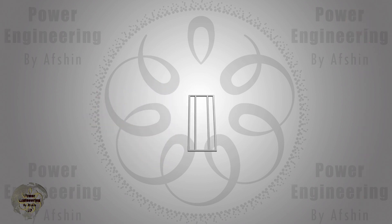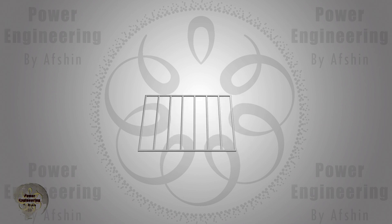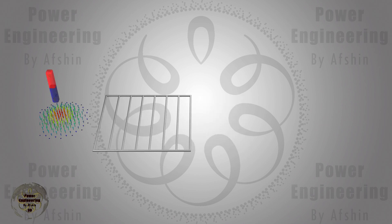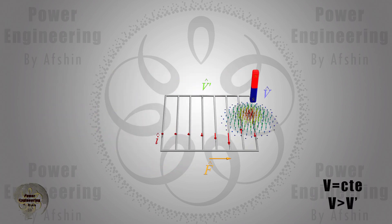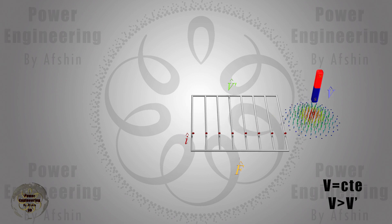Now, by increasing the number of loops and envisioning it as a metallic ladder, a greater force will be produced. As you can see, the permanent magnet moves at a constant speed, causing the ladder to accelerate.